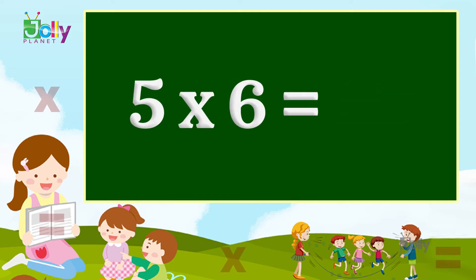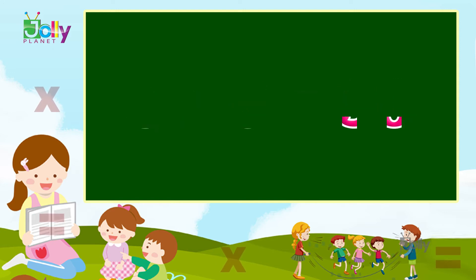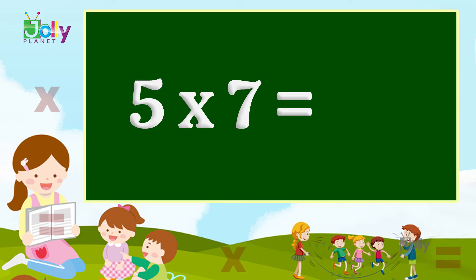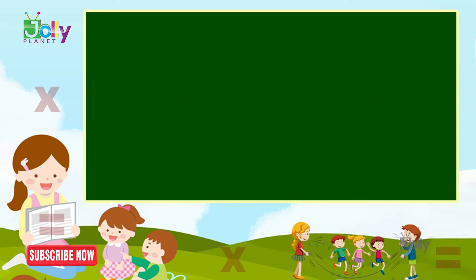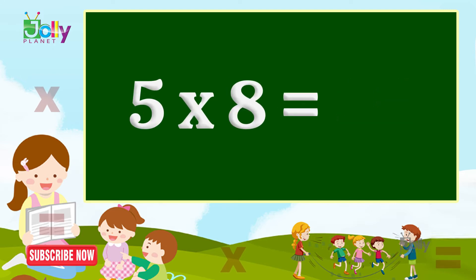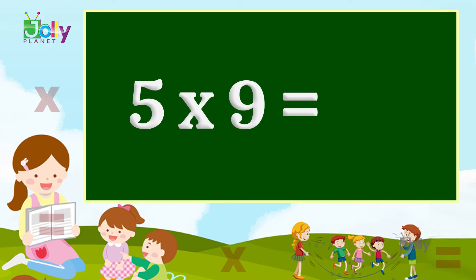Five six is thirty. Five seven is thirty-five. Five eight is forty. Five nine is forty-five.